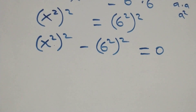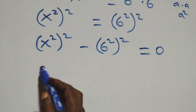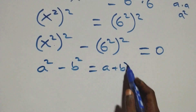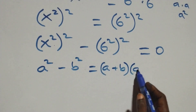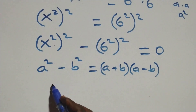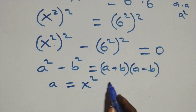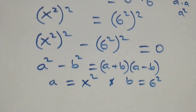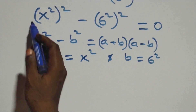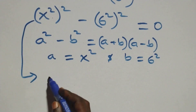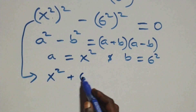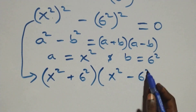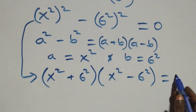This follows the difference of two squares: when we have a squared minus b squared, that is the same thing as (a + b)(a − b). Here, a stands for x squared and b stands for 6 squared. So it becomes (x² + 6²)(x² − 6²) = 0.